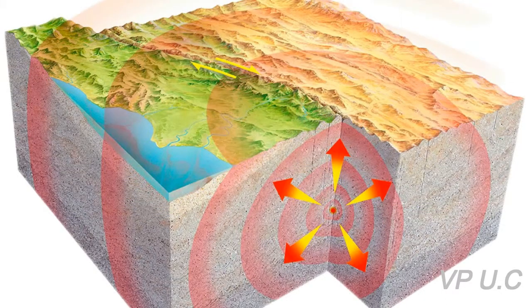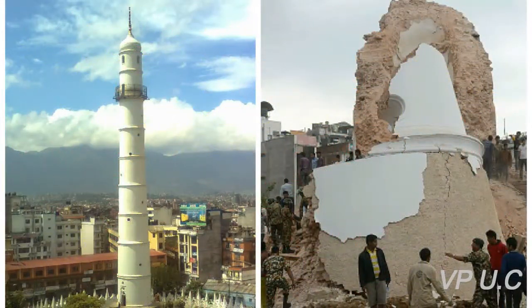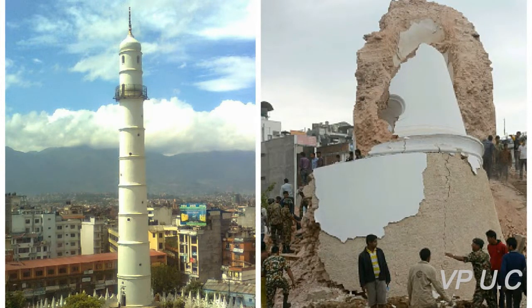The seismicity, or seismic activity, of an area refers to the frequency, type, and size of earthquakes experienced over a period of time. Earthquakes are measured using observations from seismometers.